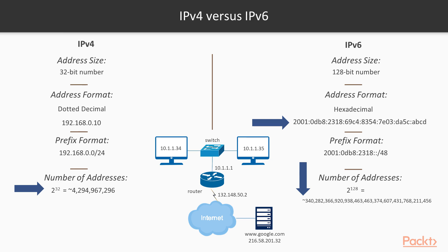The IP address is used by the router in the routing process to send a packet to its destination using the source and destination address. To get data between networks, we need to employ the use of a router. A router's job is to route IP packets between networks. Using software, the host is going to decide where a packet will eventually end up — its destination.